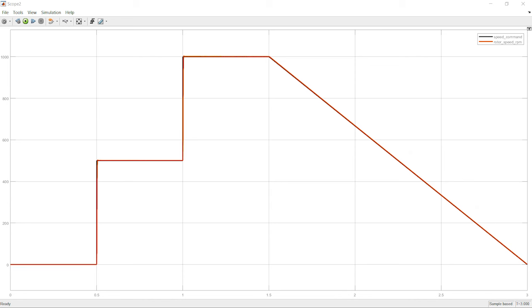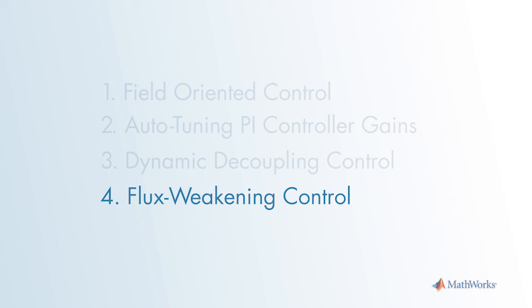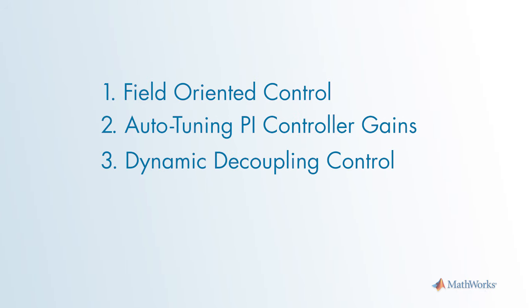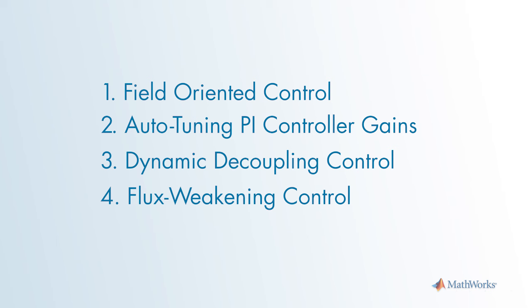Now let's move on to Topic 4: flux weakening control. This is a very important topic for PMSM control. Electric and hybrid-electric vehicles require the PMSM motor to operate in a wide range of speeds, but without flux weakening control and due to voltage limitations, PMSM machines cannot operate in the high-speed region. Looking at the torque-speed map of a PMSM machine, there are basically two operating regions: the constant torque region and the constant power region, with the corner point between them corresponding to the base speed of the motor.